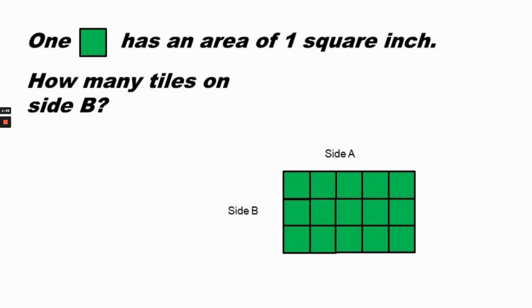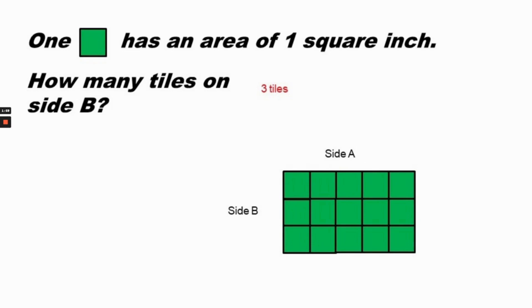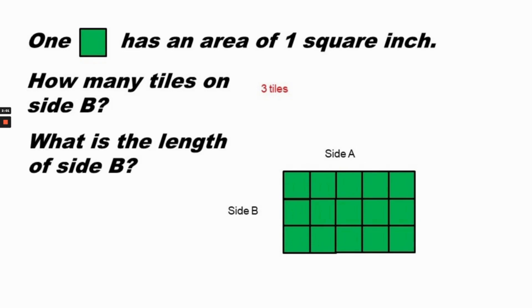In this figure, one square has an area of one square inch. How many tiles are on side A? Side A has one, two, three, four, five tiles. Each square is one inch long by one inch wide, so the length of side A is five inches. How many tiles are on side B? One, two, three tiles.